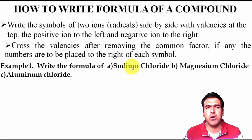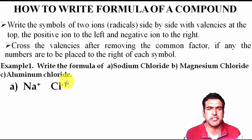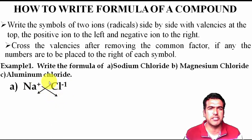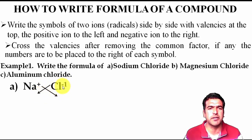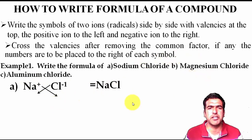For example: write the formula of sodium chloride, magnesium chloride, and aluminum chloride. First, sodium chloride — sodium has plus-one charge and chloride has minus-one charge. Cross the valences: chloride's charge (1) goes below sodium, and sodium's charge (1) goes below chloride. Formula becomes Na₁Cl₁, which simplifies to NaCl.